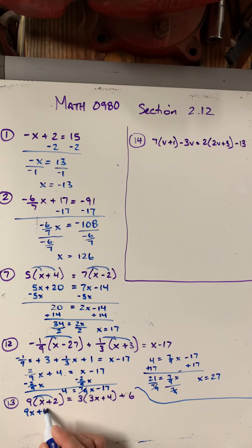But you'll notice something weird that happens when we get down towards the end. So I'm going to distribute my 9. So I get 9x plus 18 equals. And I'm going to distribute this 3. So 3 times 3x is 9x. 3 times 4 is 12 plus 6. Now I'm going to combine these two like terms so that I get the right side simplified. 9x plus 18. So notice what I have here is the exact same thing on both sides. 9x plus 18 equals 9x plus 18.